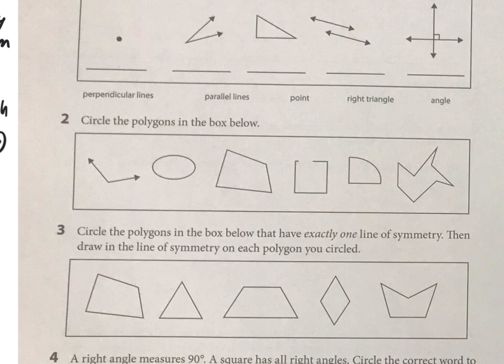I'm not going to tell you which ones, but some of them are curved and some of them are open. There are two that have straight lines, are closed, and have no curved lines. Figure out which those are and circle them.